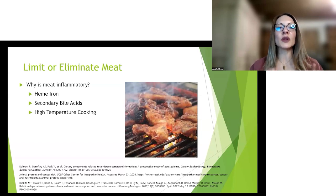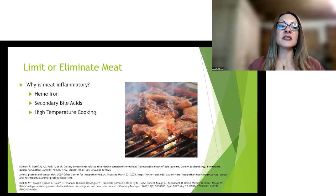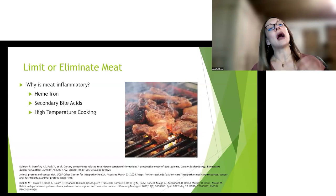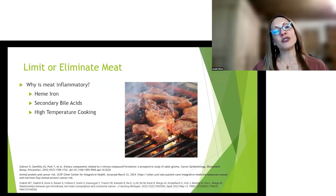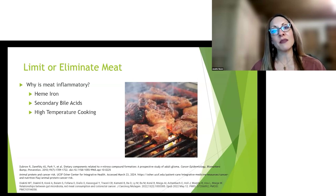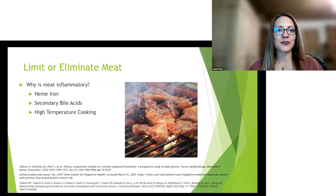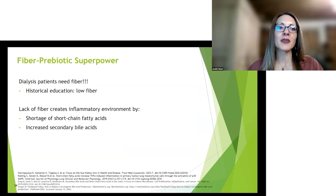We want to limit or eliminate meat because meat in and of itself is inflammatory. It has heme iron, which is inflammatory, secondary bile acids, which we just talked about, and whenever you cook meat to a high temperature it produces toxins called heterocyclic amines and polyaromatic hydrocarbons. You don't want those in your body - you don't want any toxins that your kidneys have to filter out.